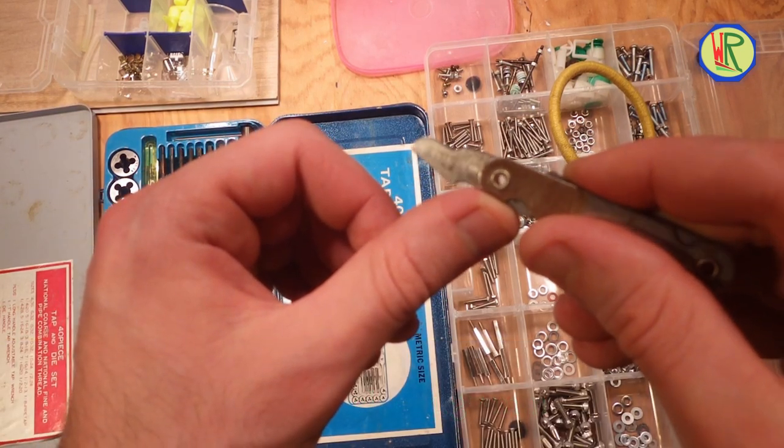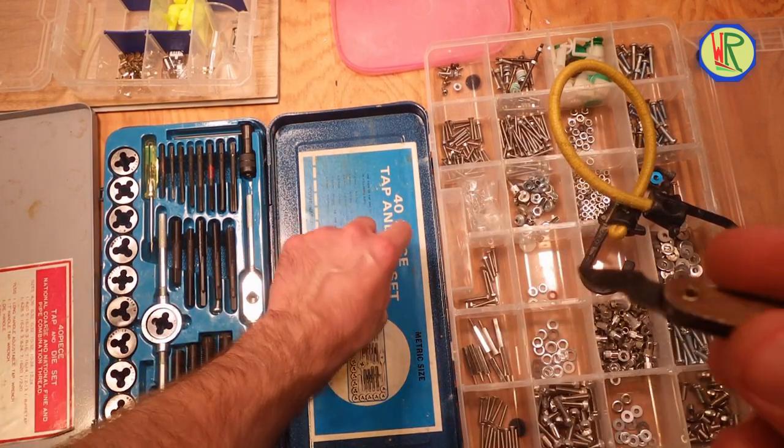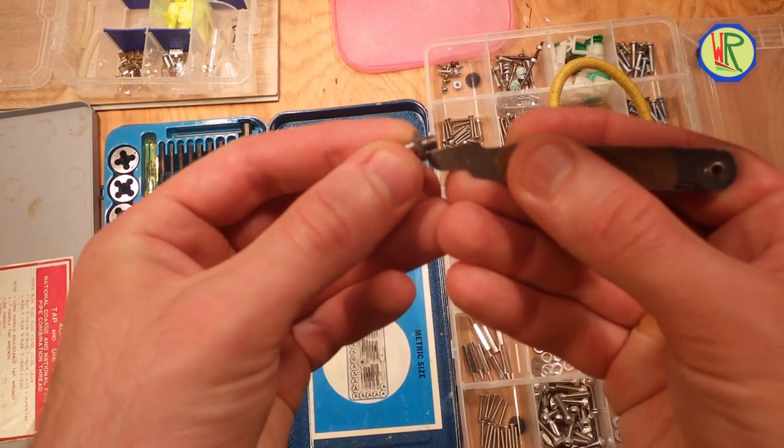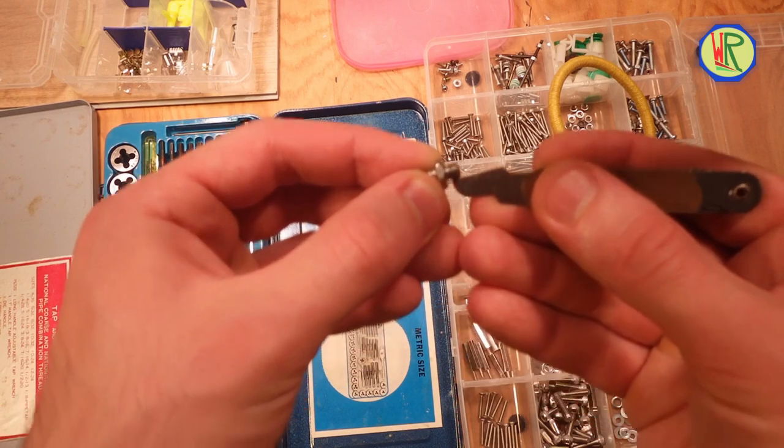This is the only drill bit that I had that was appropriate. The tap and die kit also included this wonderful tool for measuring thread pitch. However, I did not exactly trust it because I didn't have enough thread length to work with.